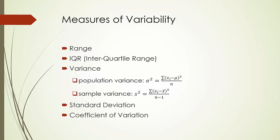A more popular measure of variability is variance, because it utilizes all the data. The formulas are provided here. We must differentiate population variance from sample variance. One key difference is mu versus x-bar. Conventionally, mu is used to denote population mean and x-bar sample mean. Similarly, sigma-squared is population variance and s-squared is sample variance. Xi minus mu or x-bar is sometimes called deviation from the mean. The numerator is the sum of squared deviations.